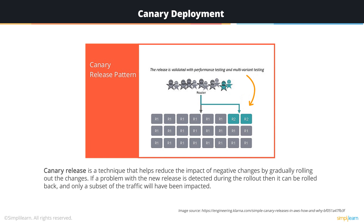Canary deployment enables two very powerful strategies. The first is performance and quality testing to a defined subset of users. The second is multi-variant testing — where there is uncertainty about which feature set best serves a user base, the canary method allows the software producer to test variant feature sets on defined subsets of the user group to determine acceptability. Once the determination is made, the final version can be deployed to all users.